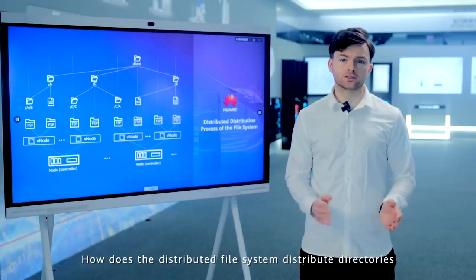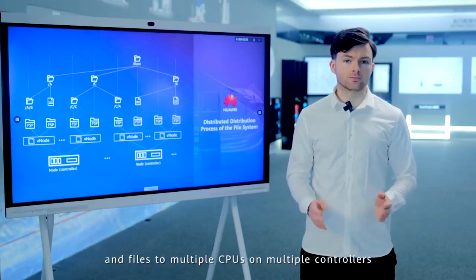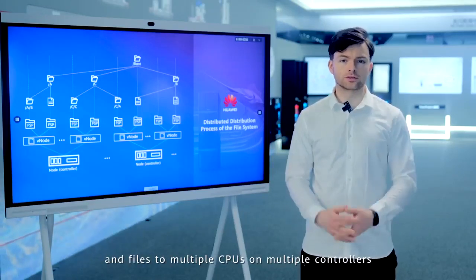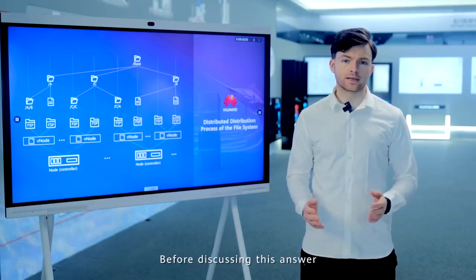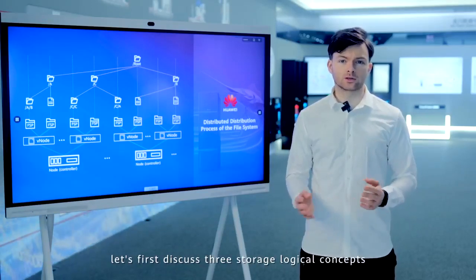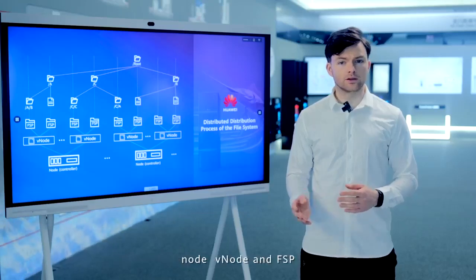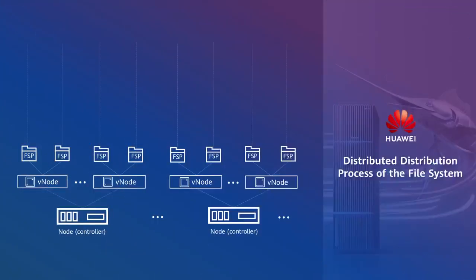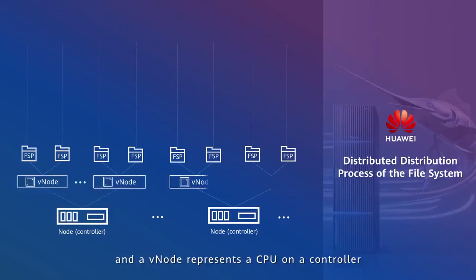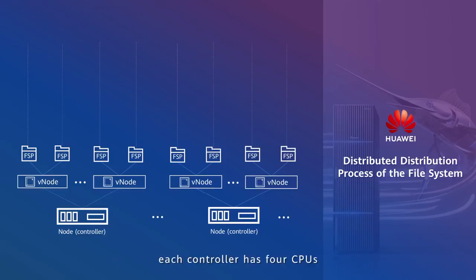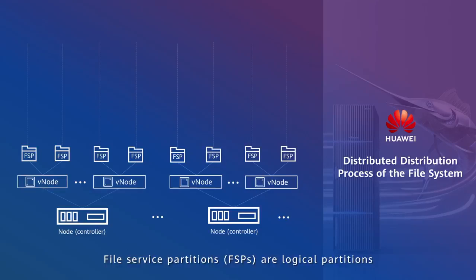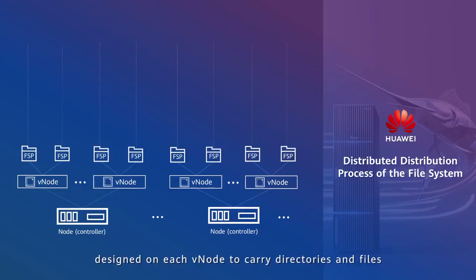How does the distributed storage system distribute directories and files to multiple CPUs on multiple controllers? Let's first discuss three storage logical concepts: Nodes, Vnode, and FSP. A node represents a controller, and a Vnode represents a CPU on a controller. On high-end models, each controller has four CPUs known as Vnodes. On mid-range models, each controller has two Vnodes. File service partitions (FSPs) are logical partitions designed on each Vnode to carry directories and files.